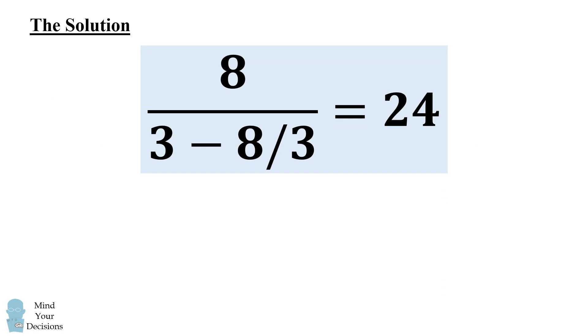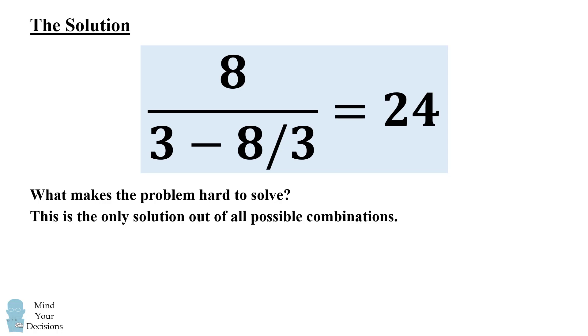So there are many reasons this is a difficult problem. It's hard to solve because first, this is the only solution out of all possible combinations of the numbers. Second, the solution involves fractions and two divisions.